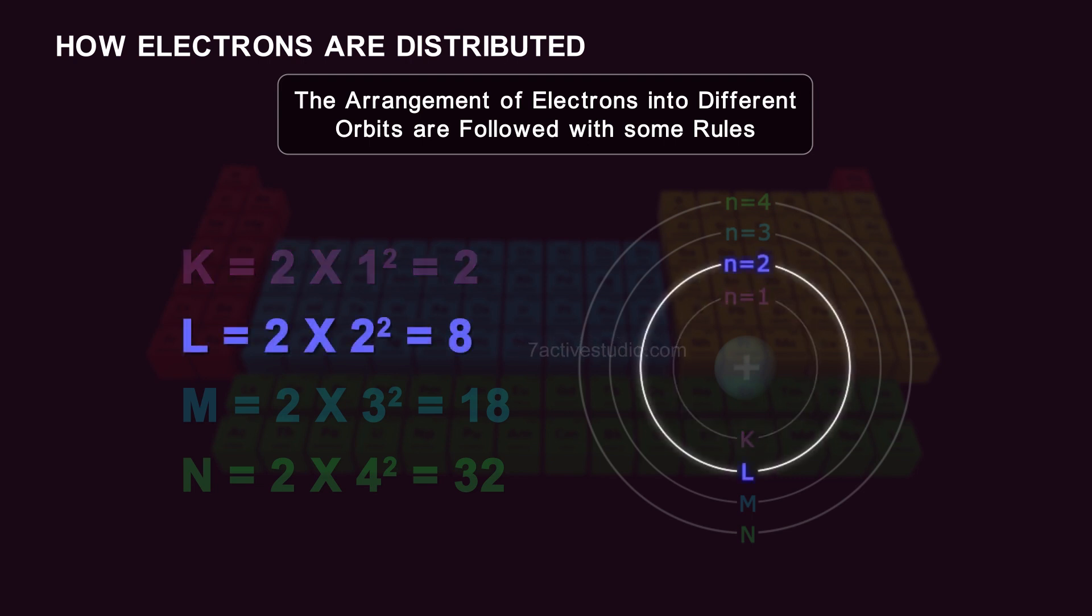The second orbit 2 or L shell can accommodate 8 electrons as per 2n square. 2 multiplies 2 square is equal to 2 into 4 is equal to 8.